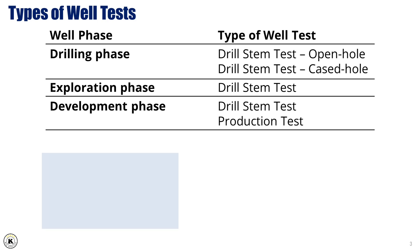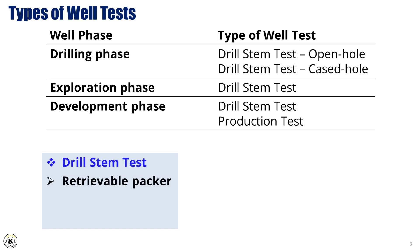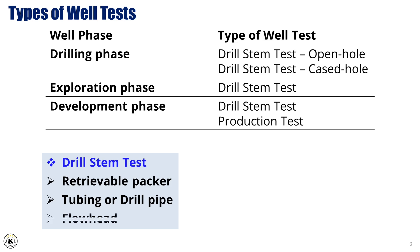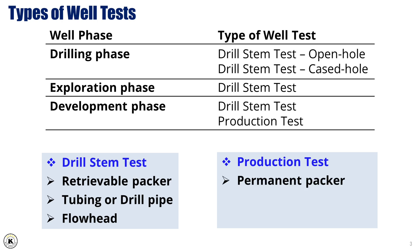Equipment used. For a drill stem test (DST): a retrievable packer is used to isolate the reservoir zone and control the flow; tubing or drill pipe provides the means to bring fluids to the surface; and a flow head controls the flow of fluids to the surface during testing. For a production test: a permanent completion packer is used for isolating the wellbore from the reservoir and controlling fluid flow in long-term production; tubing conveys fluids to the surface; and a Christmas tree — a series of valves and fittings — is used to control the flow of fluids from the well.